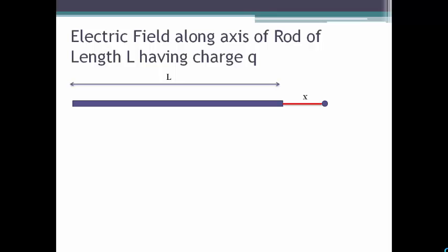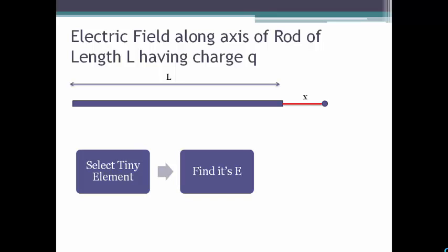Before we start with the mathematical part, there are three simple steps for these types of questions. The first step is select tiny element on the given object. Then find its E, find the electric field only due to that tiny element, and integrate for the whole body.